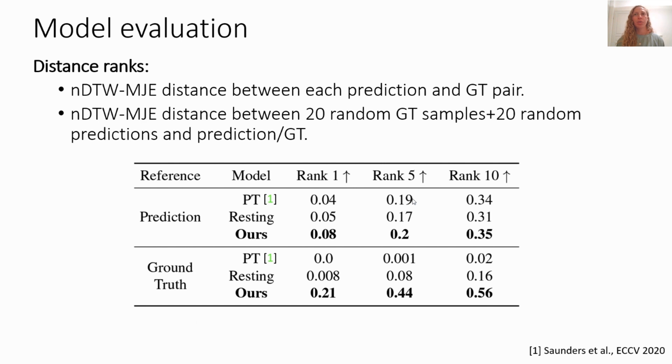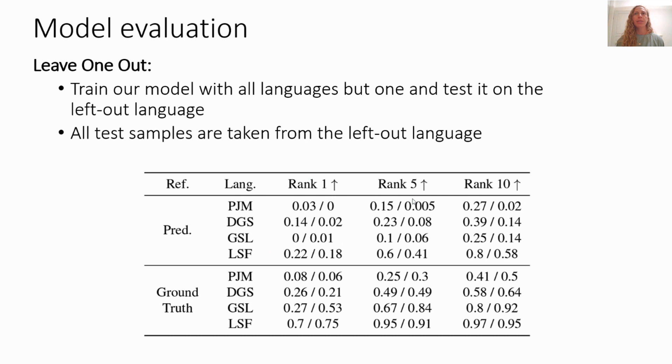We use NDTW-MJE to evaluate our model in two ways. The first is distance ranks, where we compare our model with previous work by training their model over our data and show that our model yields better results. The second is leave-one-out, where we train our model without one language at a time and test it over the leftover language. This test shows that our model can generalize to unseen languages by yielding similar results when tested over a specific language, whether the model was trained on that language or not. Nevertheless, there is some degradation in the results, which we attribute to insufficient data and rare glyphs that only appear in the tested language.